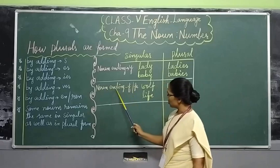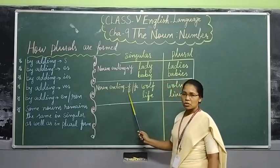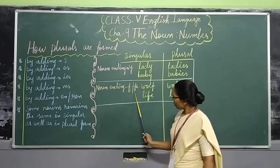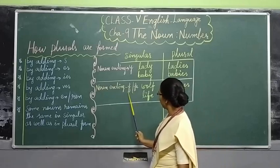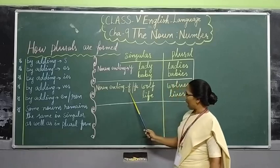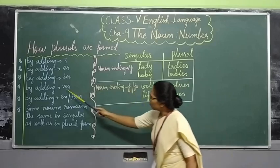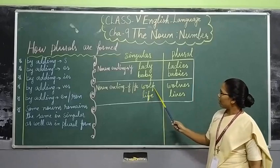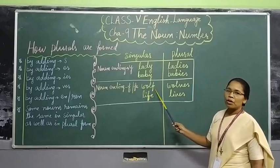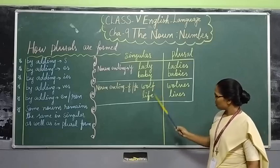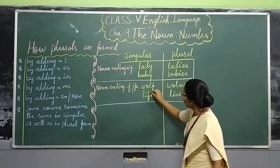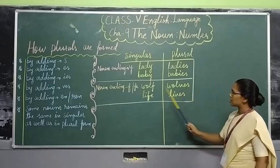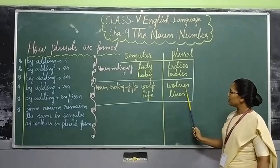There are also some nouns ending in the letter f or fe. In that case, you have to remove the f, then add -ves. For example, a word ending in f — while forming the plural form, remove the f and add -ves.